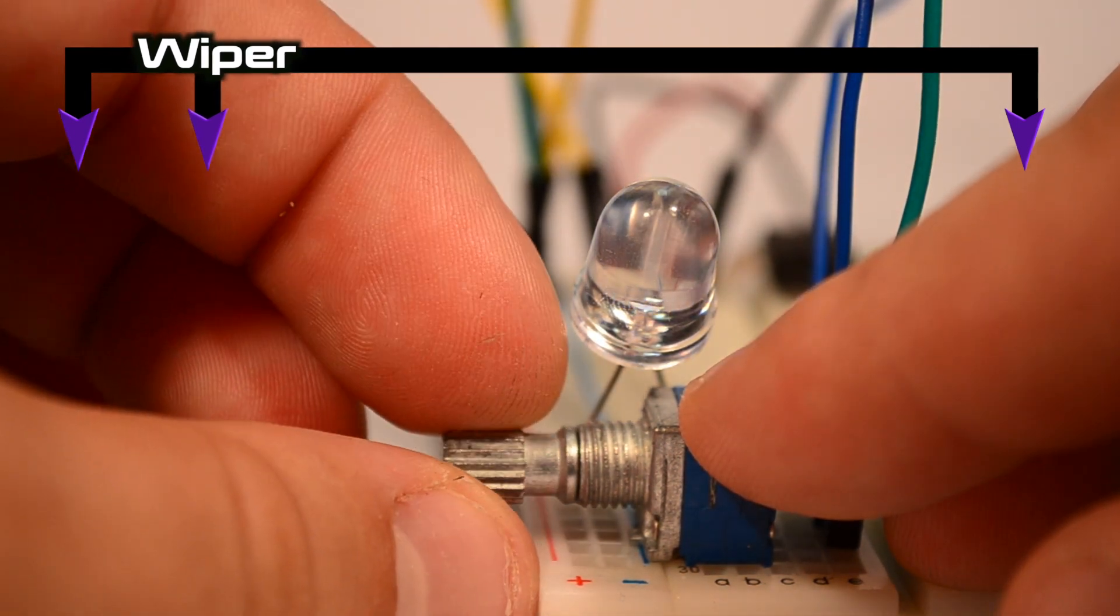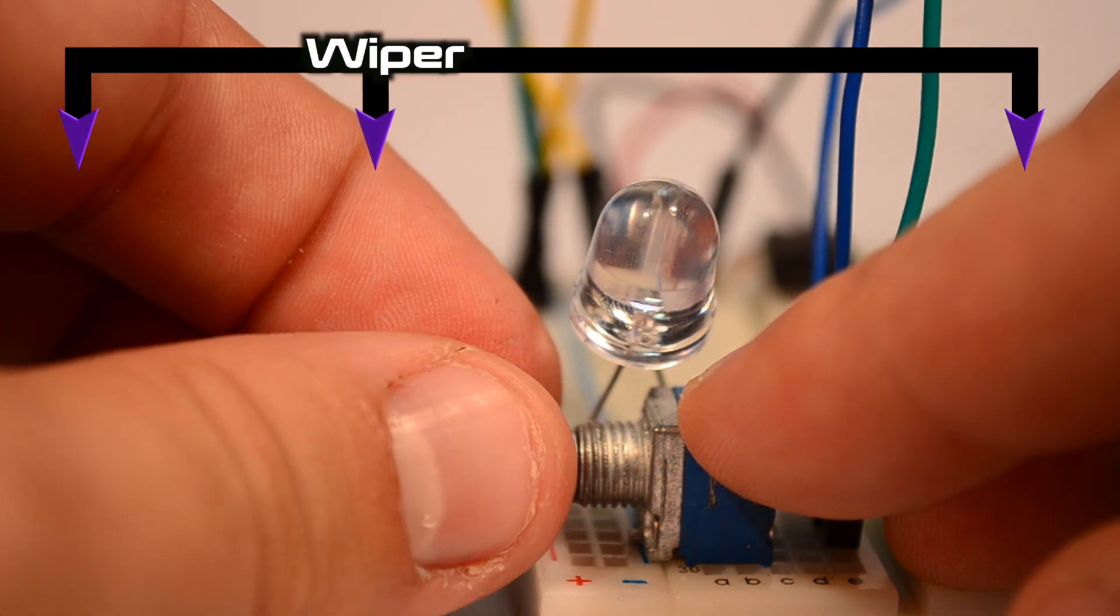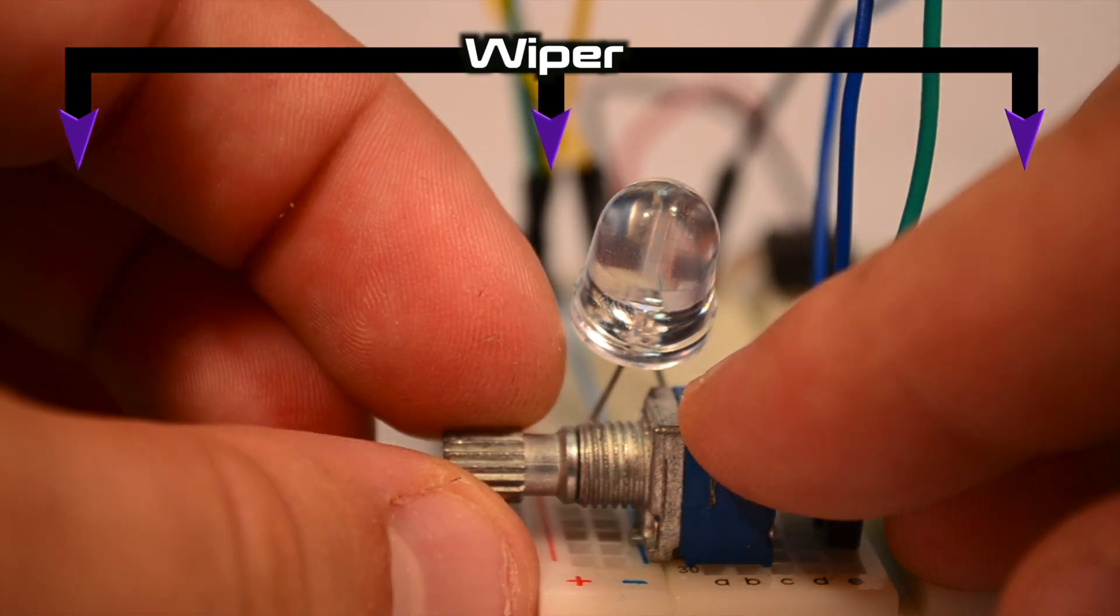Conversely, as we increase the distance between the wiper and the terminal of the potentiometer, the resistance also increases, allowing less current to flow to the LED.